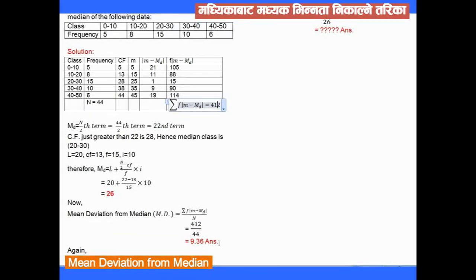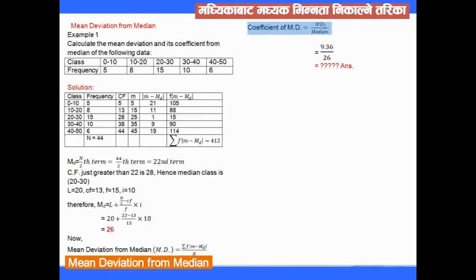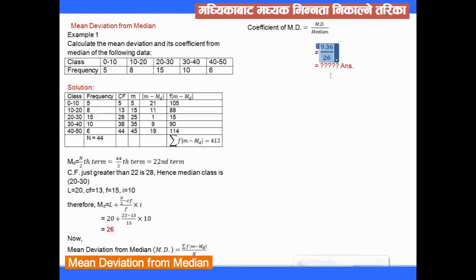The mean deviation from the median is 9.36 for this data. We can also find the coefficient of mean deviation using the formula: mean deviation divided by median. So the coefficient = mean deviation / median. If you have any confusion, you can refer to the video on mean deviation from mean.